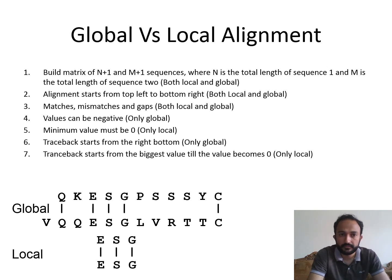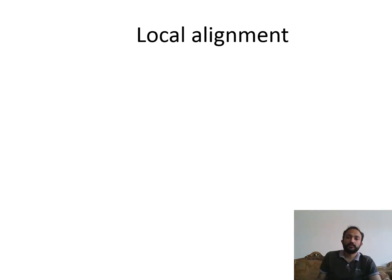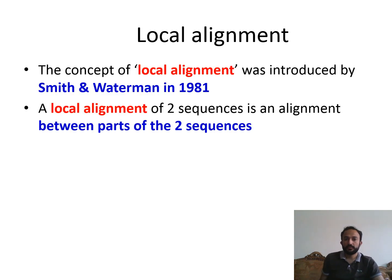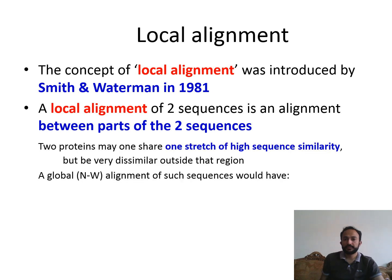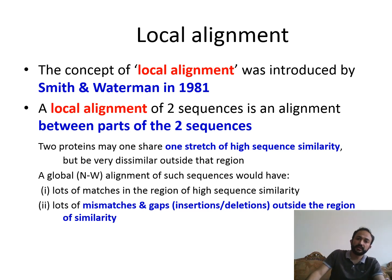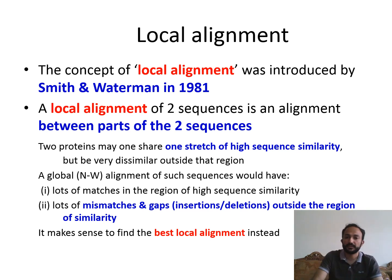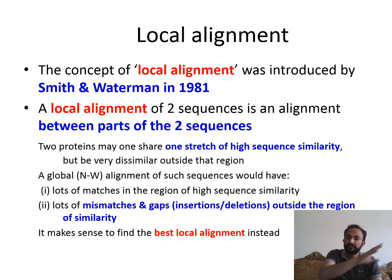Next, in the following slide we will start the local alignment algorithm. The overall summary of local alignment: it was introduced in 1981 by Smith and Waterman. We align two sequences and identify the best alignment — one stretch of high sequence similarity — between the two sequences. There can be more than one such stretch.